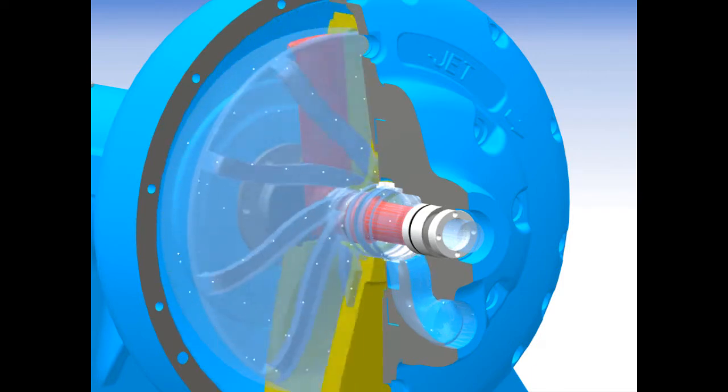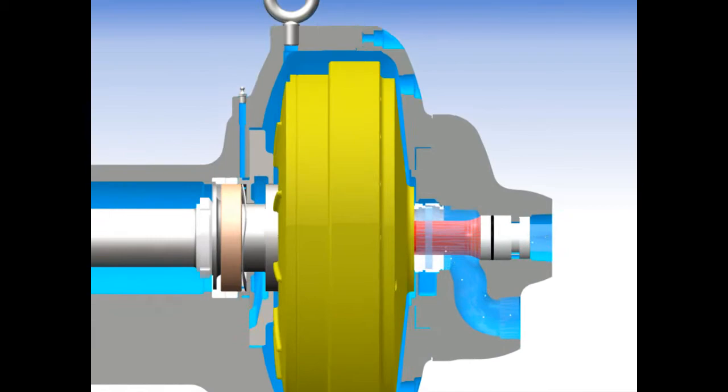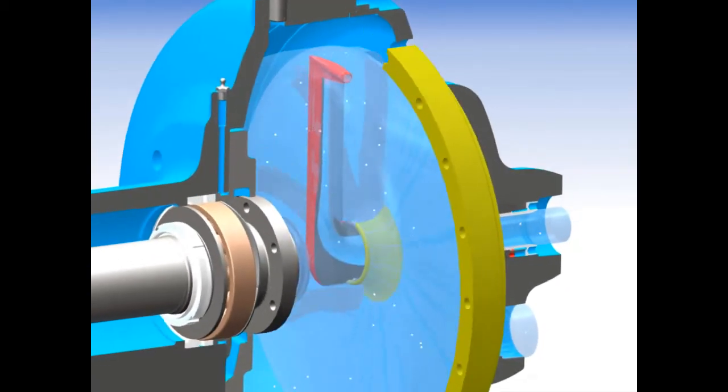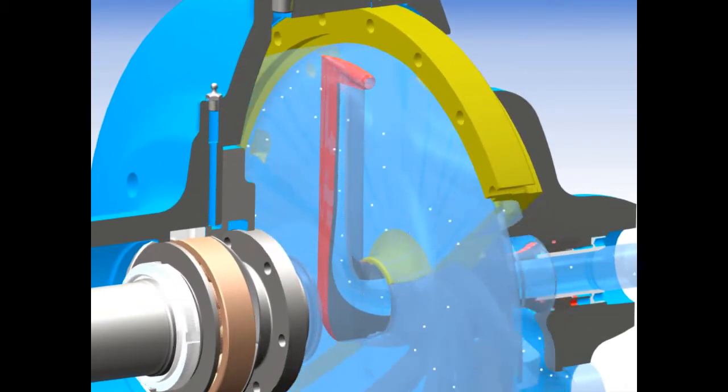Its stationary pitot tube is extended vertically from the centre of the rotating case, where its internal passage is curved to impact against the fluid flow rotating within the rotor.